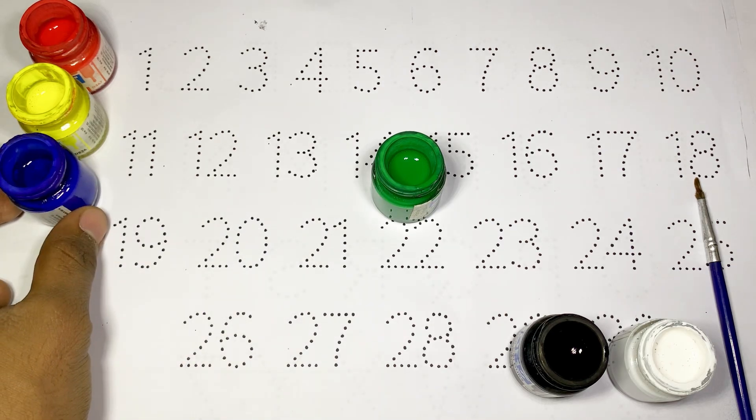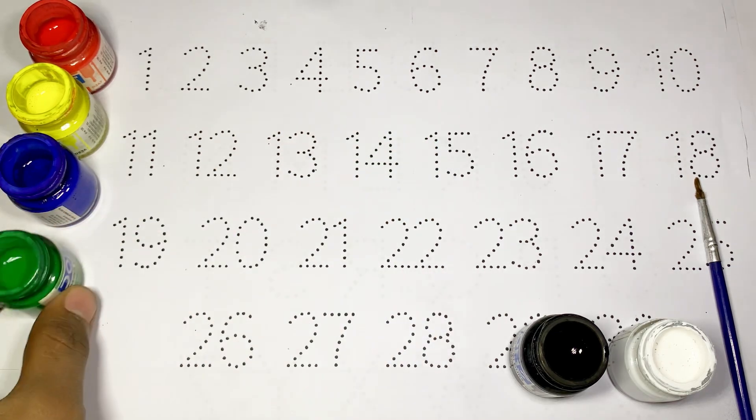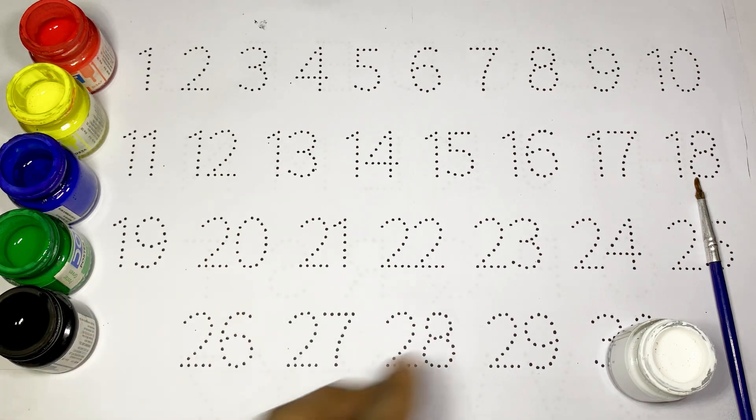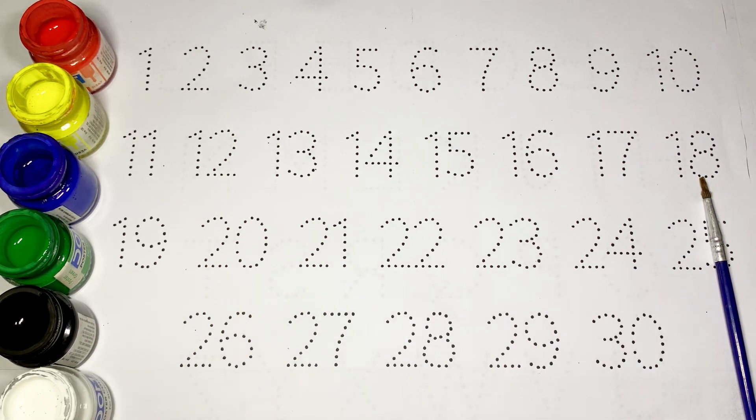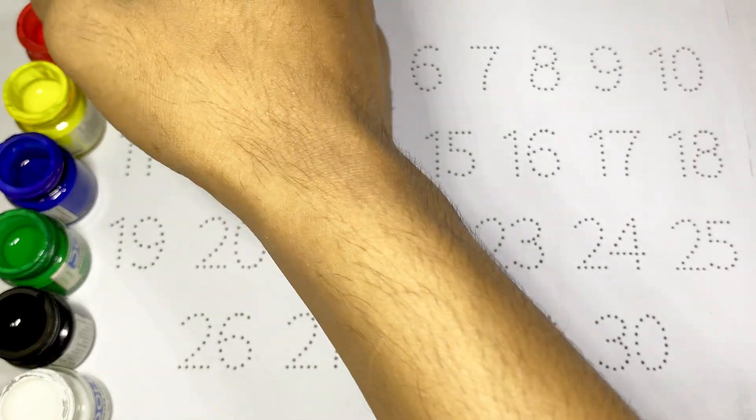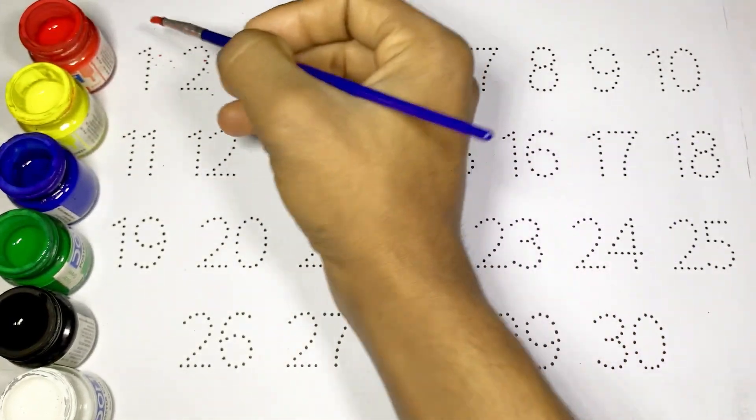blue color, green color, black color, and white color. Kids, now for the numbers. First we draw 1 and use red color.